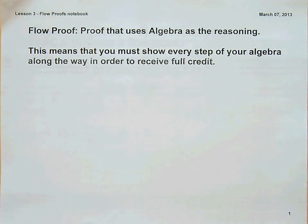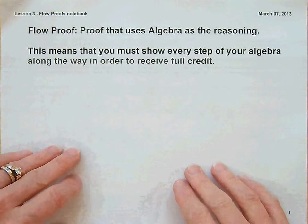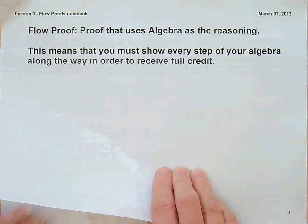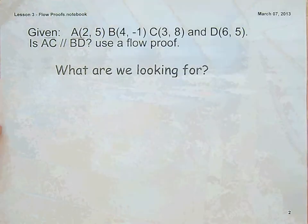Continuing with Unit 6 on parallel lines, this is Lesson 3 on flow proofs using algebra as your reasoning. You have to show your algebra steps in your flow proof. You might like these better.